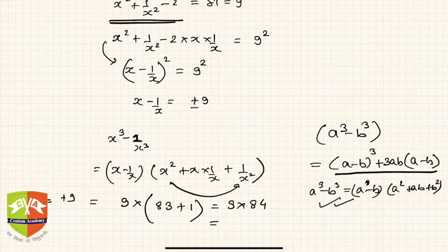9 × 84: 9 × 4 is 36, carry 3, 9 × 7 is 63 plus 3 is 756. So this is the value.